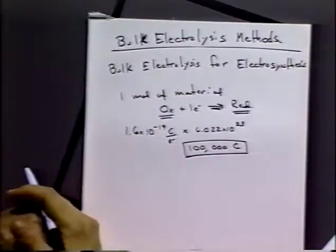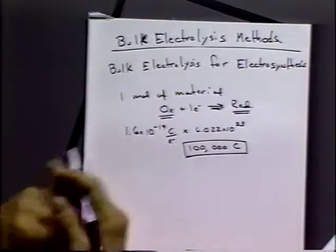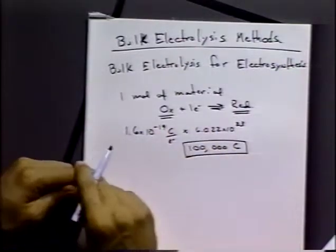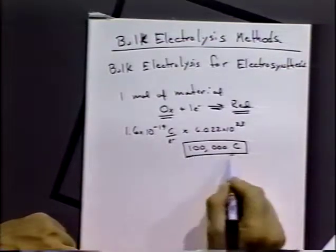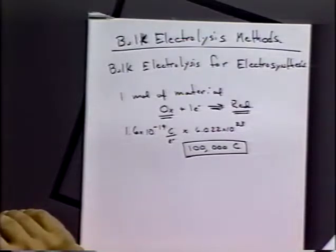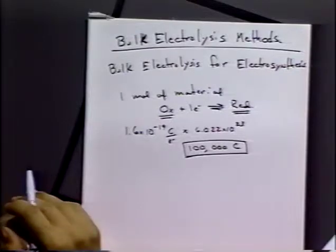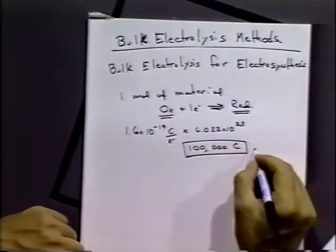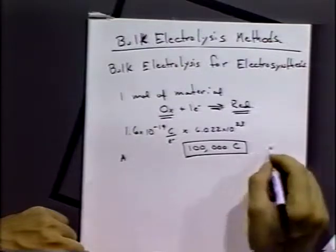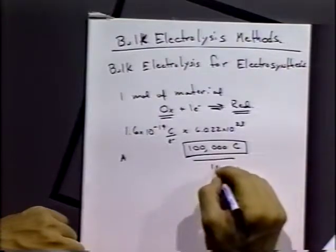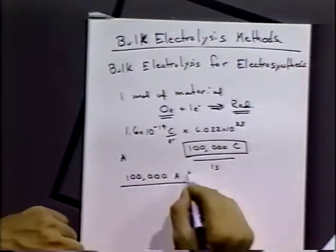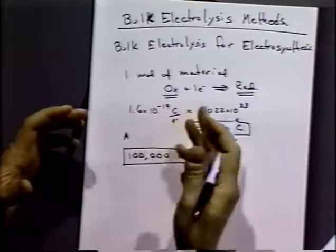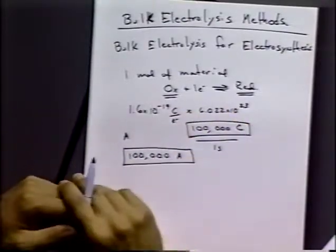If we try to do this electrosynthetic reaction in one second, let's think about how reasonable that might be. If we take 100,000 coulombs and put it through in one second, that means we're going to have to pass 100,000 amps of electricity. That's not something you're going to find lying around in the lab as a power supply, so we're not going to be able to do that sort of process.